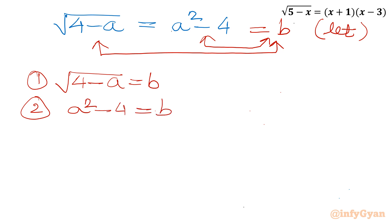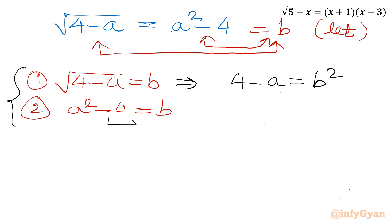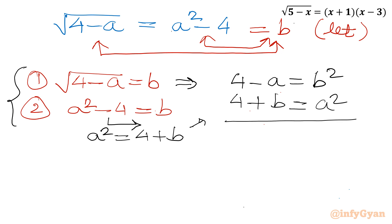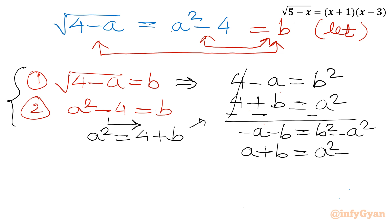Let us solve for the values of a and b. I will square the first equation, giving 4 minus a equals b squared. From the second equation, a squared equals 4 plus b. Now I subtract both equations. After sign change, this gives: minus a minus b equals b squared minus a squared. Multiplying by minus 1: a plus b equals a squared minus b squared.